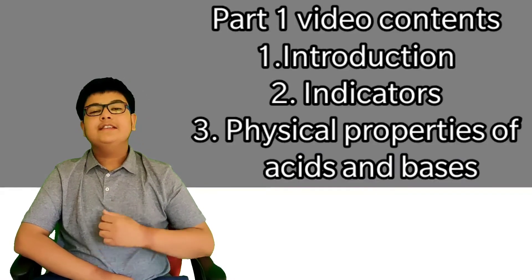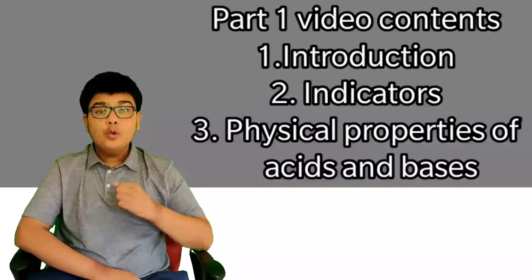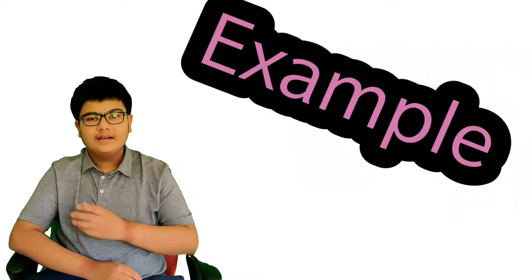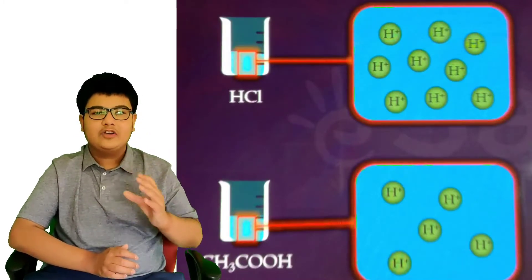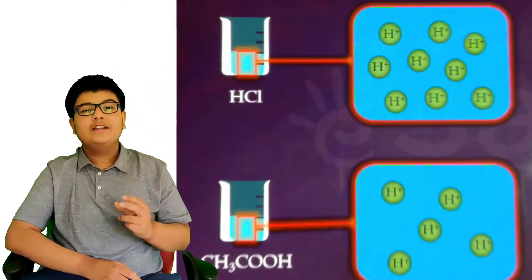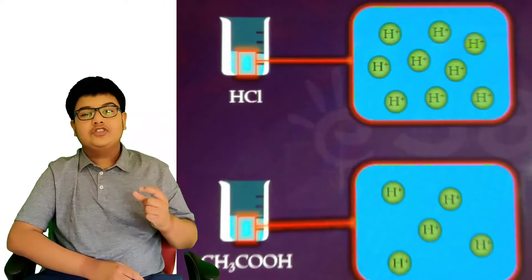In the previous parts we saw that indicators can be used to differentiate between an acid and a base. But if we are given two acids, how will we tell which is a strong acid and which is a weak acid? For this we need to know the concentration of H+ ions. For example, hydrochloric acid is a strong acid as it has a higher concentration of hydrogen ions, but acetic acid — present in vinegar — has a very low concentration of H+ ions, so it is a weak acid. To know the strength of an acid or a base, we need to know the concentration of hydrogen ions in that solution.